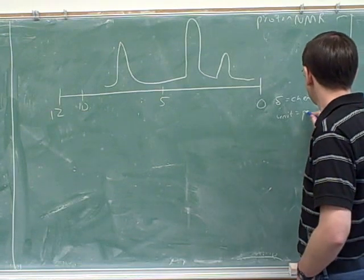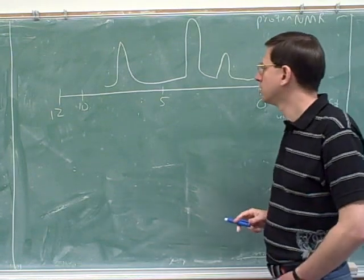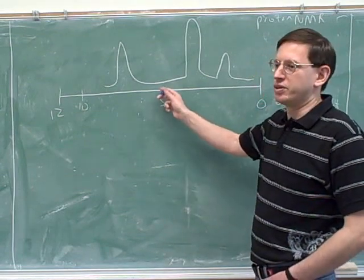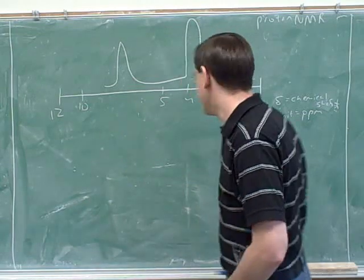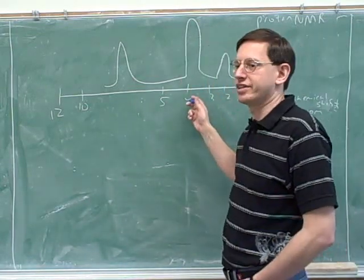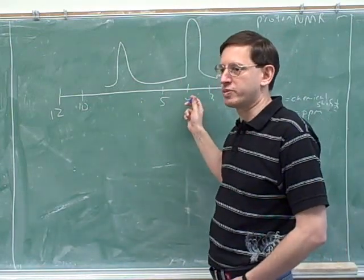I'm just putting this in as a typical number. So here would be 4, 3, normally you have all the numbers. I just want to say that these numbers are called the deltas, or the chemical shifts, and they're in parts per million, ppm.